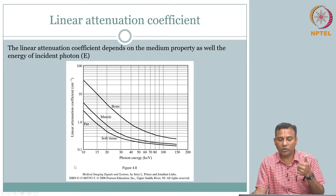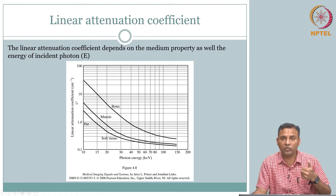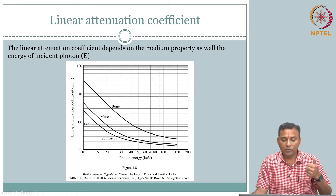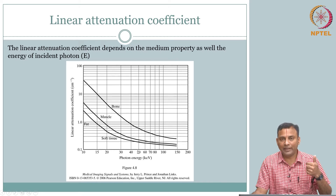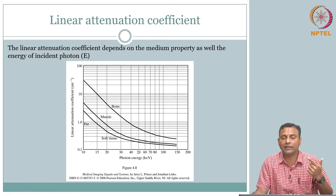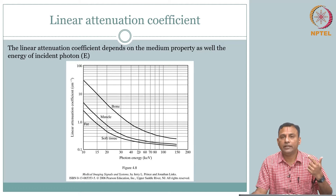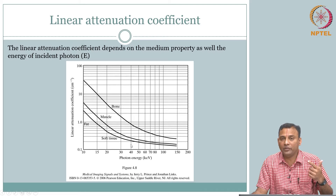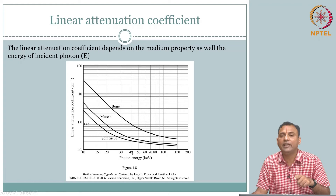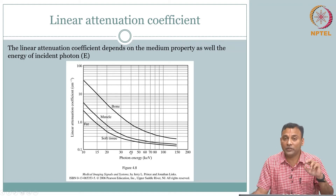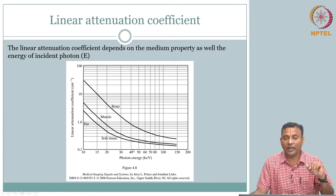The take-home message from this slide is very powerful: mu is a function of energy. When you say a material has an attenuation coefficient, it is not just one value — it has an attenuation coefficient at a particular energy level. That is becoming one of the additional variables.